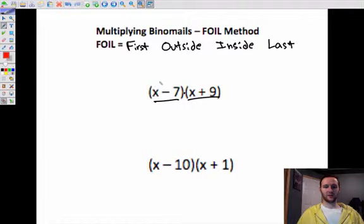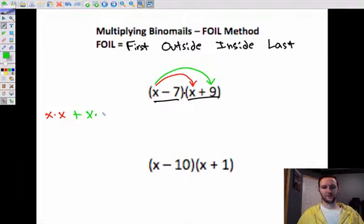So polynomial, polynomial, multiplied together. The first refers to the first two terms. So that's x times x. Then you got the outside terms, which is x times 9.